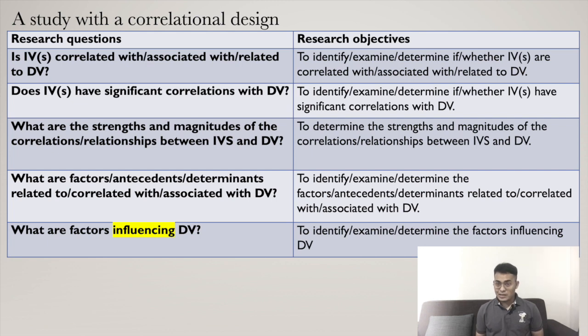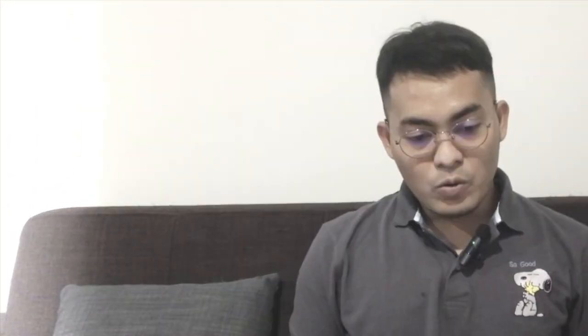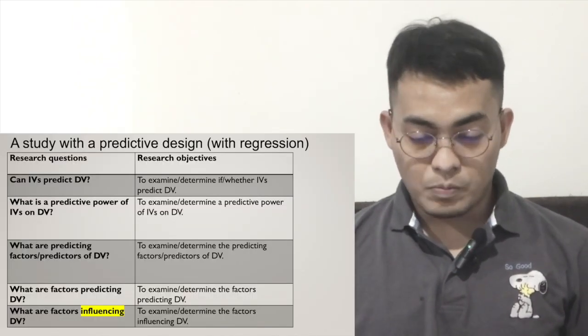I've marked those in yellow so you can see what they mean in the next slide. Now moving on to a study with predictive design with regression only. The way we write predictions can also be used for path analysis or structural equation modeling as well.